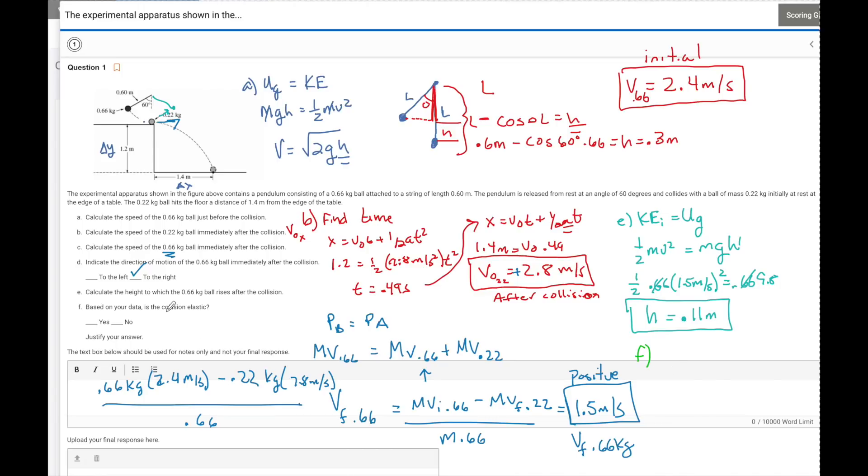And for part F, they want to know, is this an elastic collision? Yes or no? Now, remember guys, we decide if something is elastic or inelastic by the kinetic energy initial, if that is equal or not equal to the kinetic energy final. If they are equal, it is elastic. If it is not equal, it is going to be inelastic.